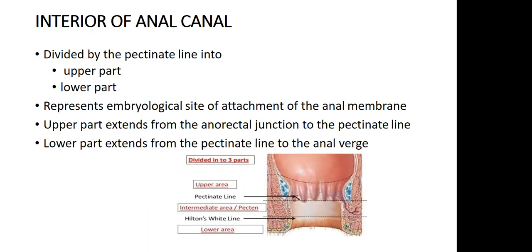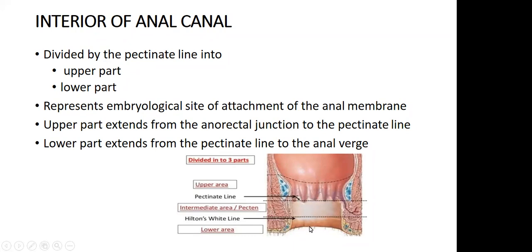The interior of the anal canal is divided into upper and lower parts by the pectinate line, which is the site for attachment of the anal membrane. The upper part extends from the anorectal junction to the pectinate line, and the lower part extends from the pectinate line to the anal verge. The pectinate line is the junction of two tissues different in their development, blood supply, lymphatic drainage, and nerve supply.